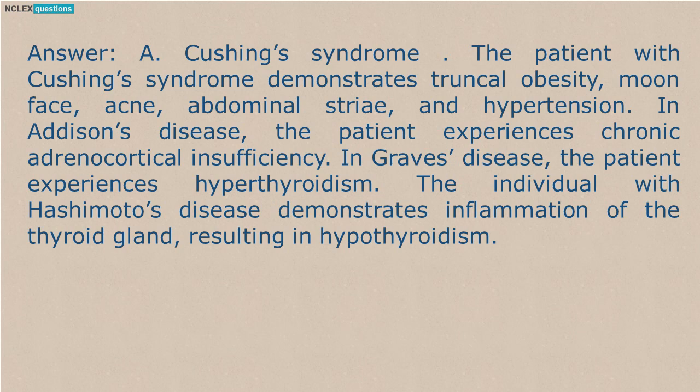Answer: A. Cushing's syndrome. The patient with Cushing's syndrome demonstrates truncal obesity, moon face, acne, abdominal striae, and hypertension. In Addison's disease, the patient experiences chronic adrenocortical insufficiency. In Graves' disease, the patient experiences hyperthyroidism. The individual with Hashimoto's disease demonstrates inflammation of the thyroid gland, resulting in hypothyroidism.